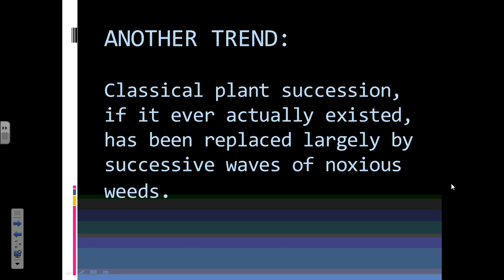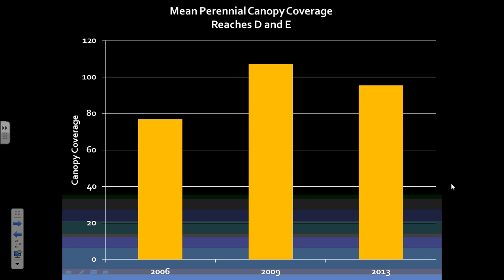Another trend: if you're waiting for things to get better on themselves in an upland, basically you're going to just see which weeds come in next. Looking at perennial plant canopy coverage — it went up and then it kind of came down.